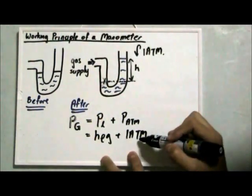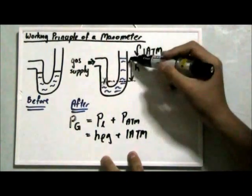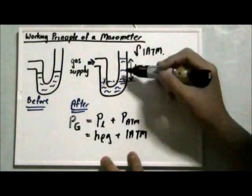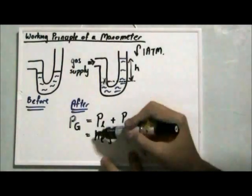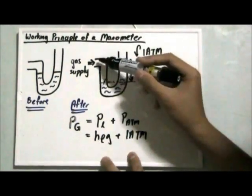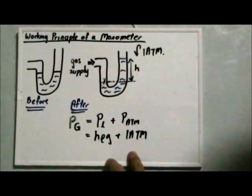The atmospheric pressure we can find out using a barometer, and with the height recorded and density of the liquid as well as gravitational field strength, we can actually calculate the pressure of the gas supply that is plugged into the manometer. So this is how a manometer works. Thank you.